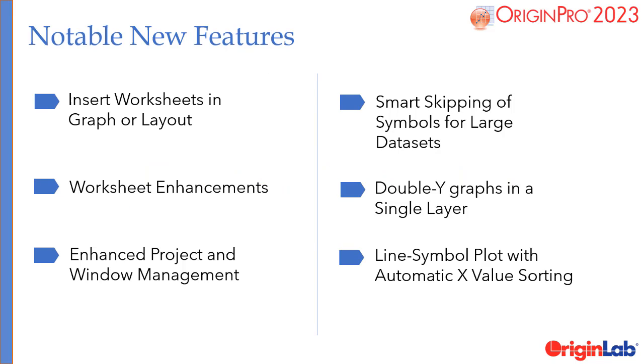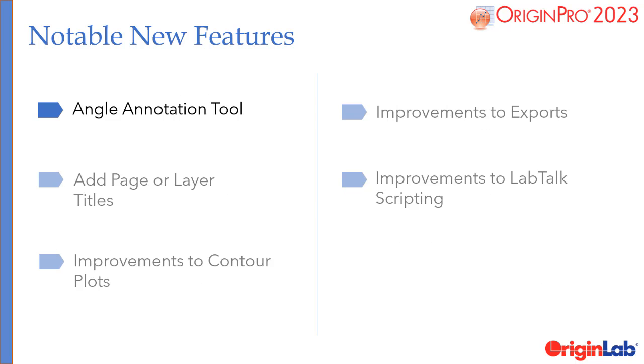The key features of Origin 2023 are: insert worksheets in graph or layout, worksheet enhancements, enhanced project and window management, smart skipping of symbols for large datasets, double Y-graphs in a single layer, line symbol plot with automatic X-value sorting, angle annotation tool, and add page or layer titles.